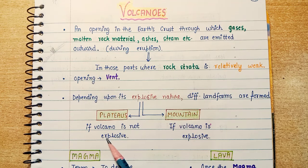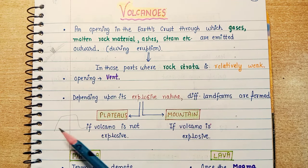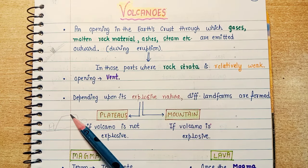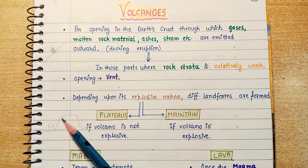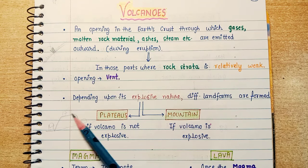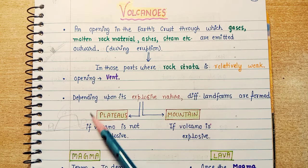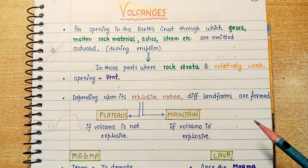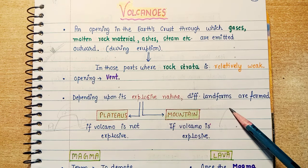Plateaus happen if the volcano is not very explosive — it is small. A plateau is where this is our earth's surface but this area is a little bit higher than the surrounding area. People also live there — homes, temples, schools, libraries. These landforms are called plateaus and occur where volcanoes are not highly explosive. If a volcano is explosive and the eruption is very big, mountains are formed.